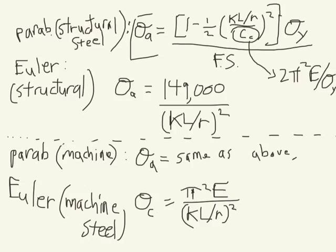But if it turns out that our column is slender and we have to use the Euler equation, then we can't use the structural form.